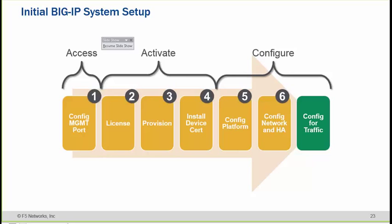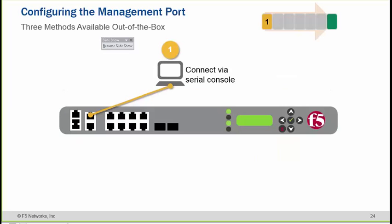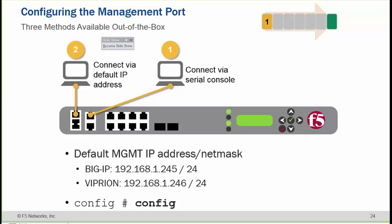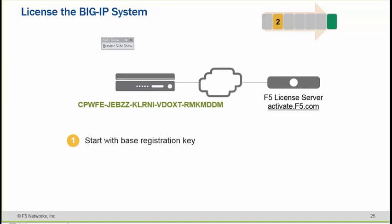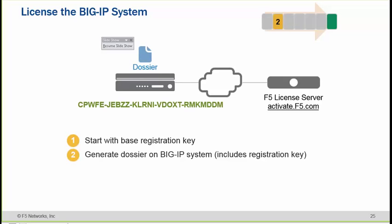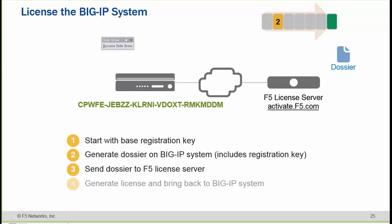Behind F5 configuration — how we can configure the management to connect via the console cable or by putting a laptop towards the management IP and then assigning the IP to the management interface. You need a base registration key, and that base registration key creates one file called the dossier, which needs to be sent to the F5 licensing server.